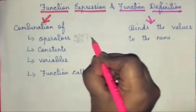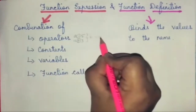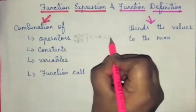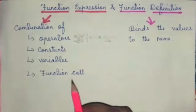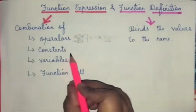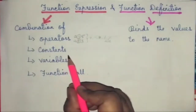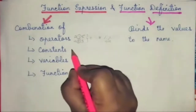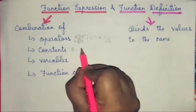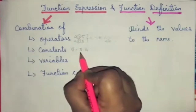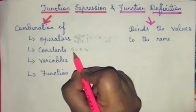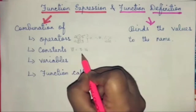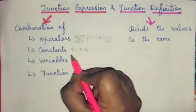Likewise, plus, minus, multiplication, division, modulus, etc. — these are all operators. Next one is constants: the value of a constant cannot be changed. For example, pi = 3.14. This 3.14 is a constant value of the variable pi. We cannot change the pi value anytime or anywhere. This type of constant value is called a constant.